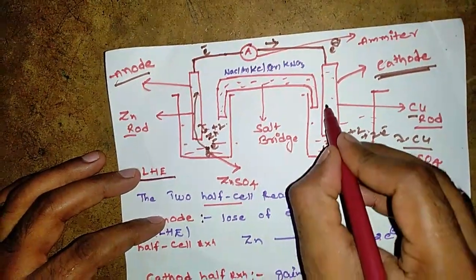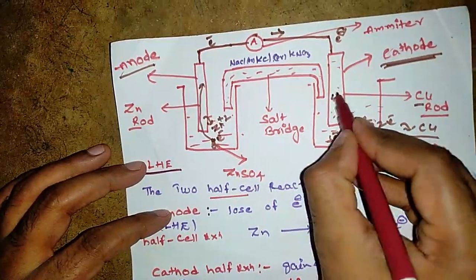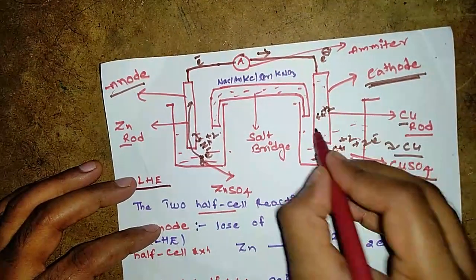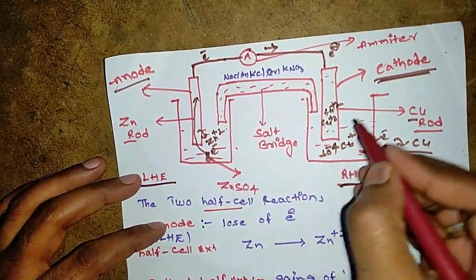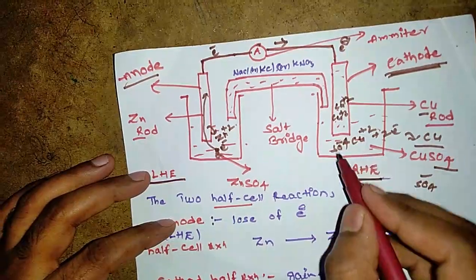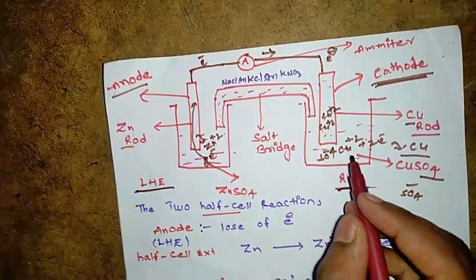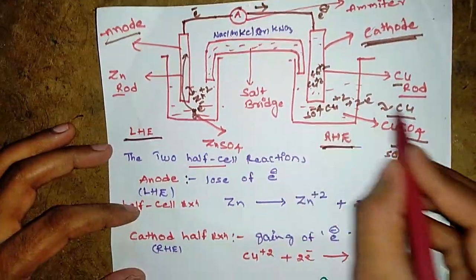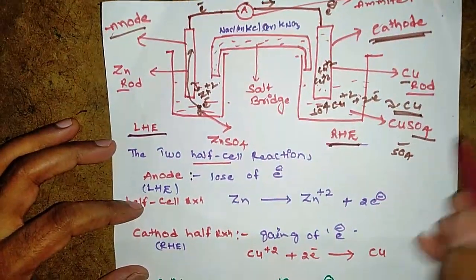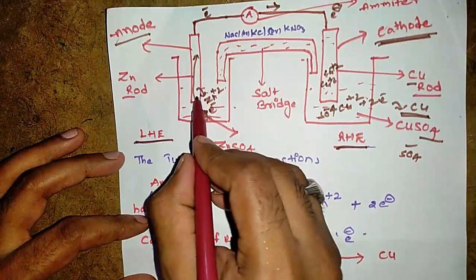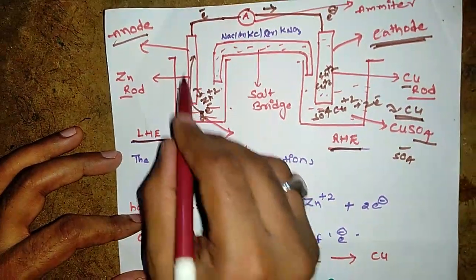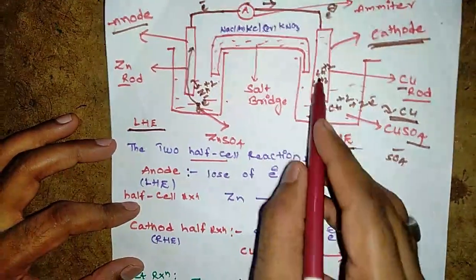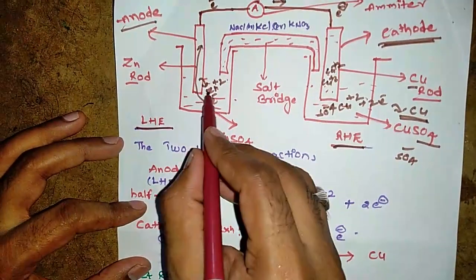Copper ions come to the cathode and take the electrons, forming copper. The electrons lost at the anode move towards the cathode. Zn²⁺ ions increase at the anode side.